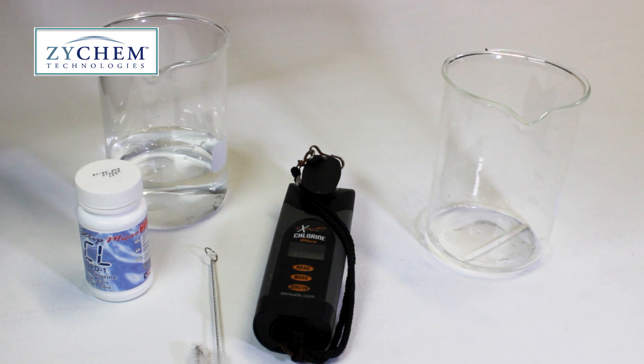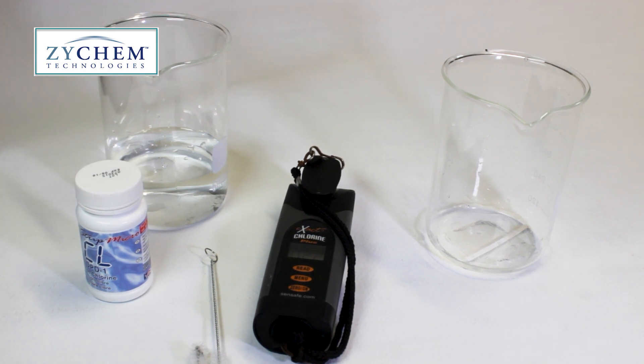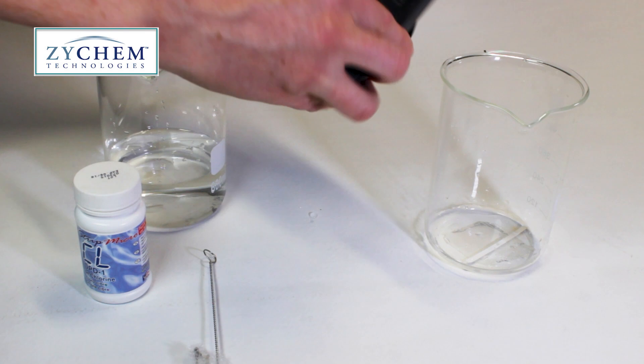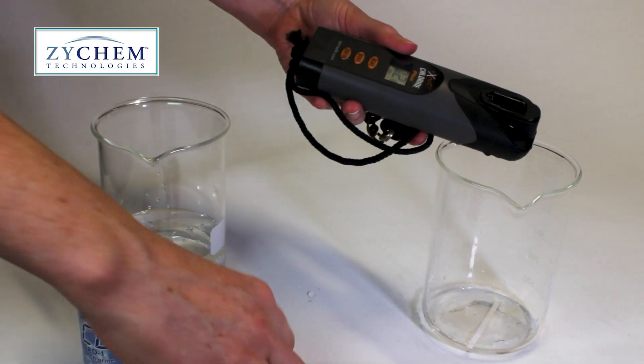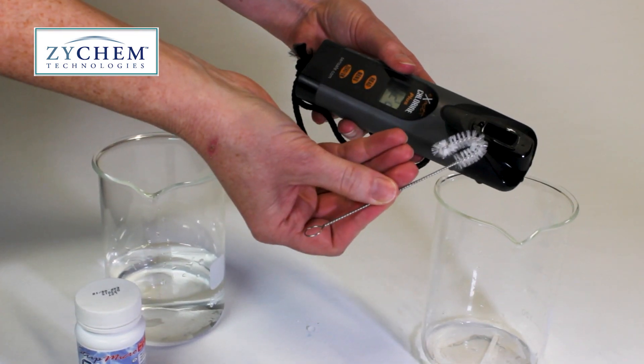Remember at the end of each test, discard the water in the cell and give the cell a clean with a dedicated cleaning brush. You don't want any of the dye from the reagents to linger in the cell and cross-contaminate future readings.